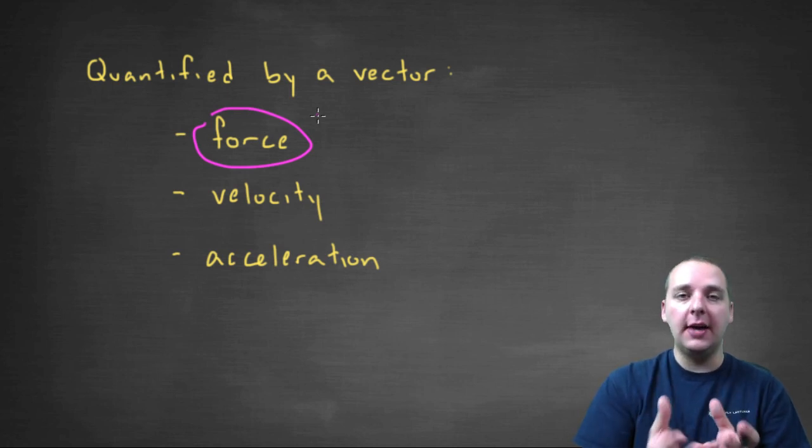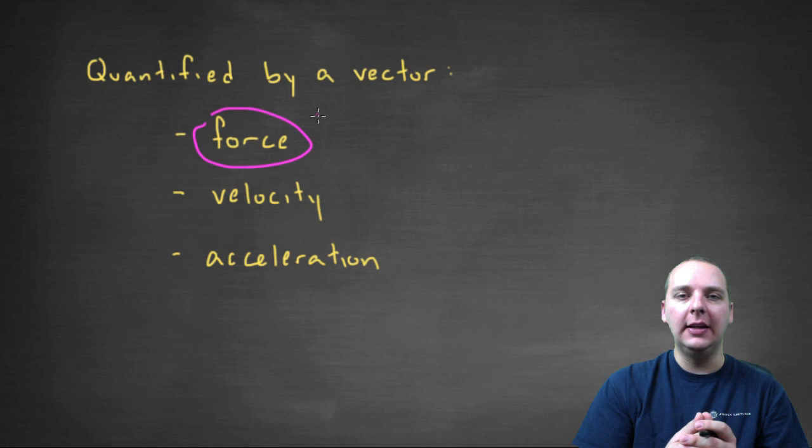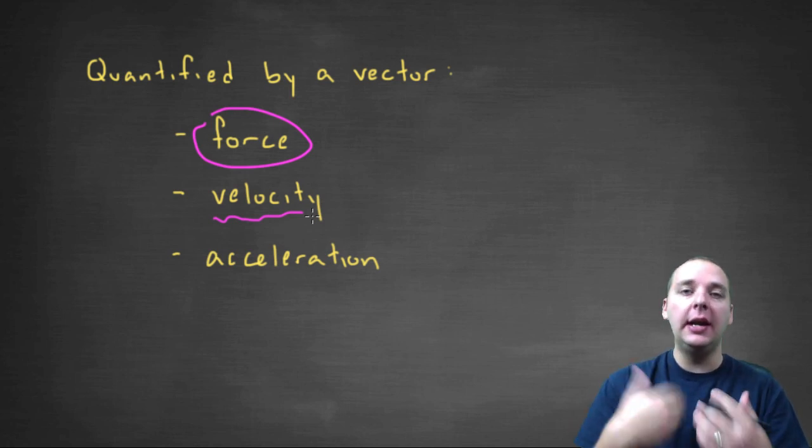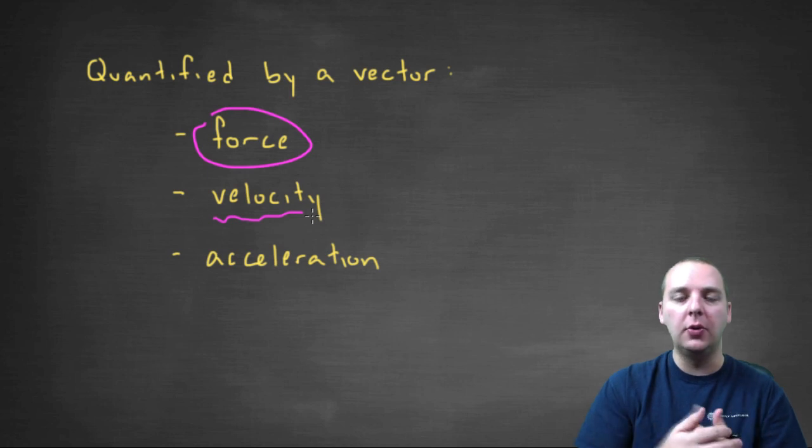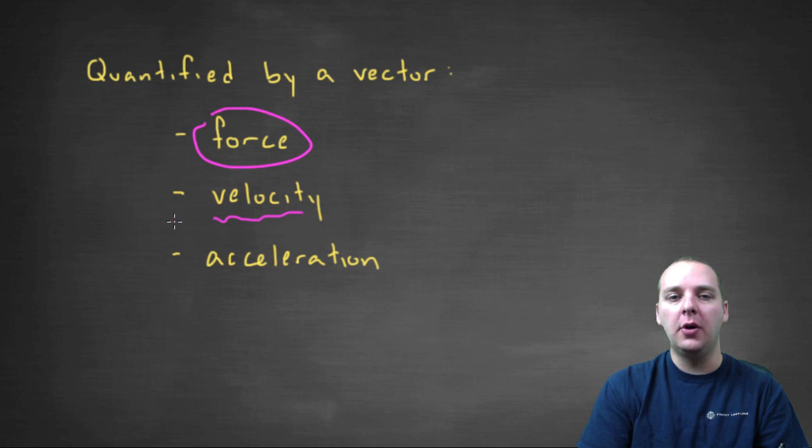Something similar to velocity would be speed. Speed is just a numerical value. It doesn't matter if you're going forwards or backwards or whatever. Your speed is your speed. Velocity though could be positive or negative depending on what direction you're going. So, velocity would be typified by a vector, where speed would be quantified by what's called a scalar, which is just a numerical value.